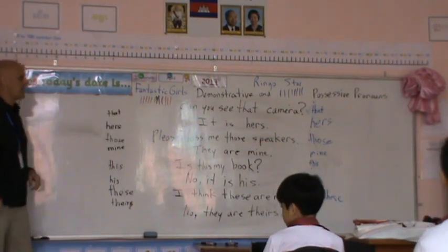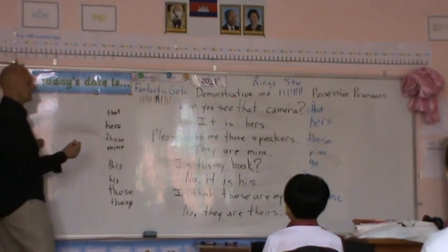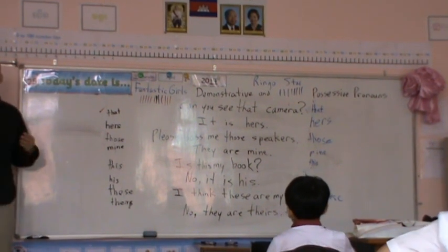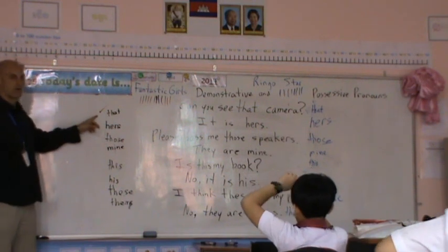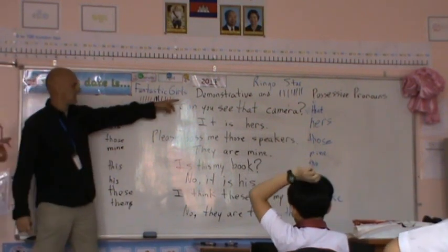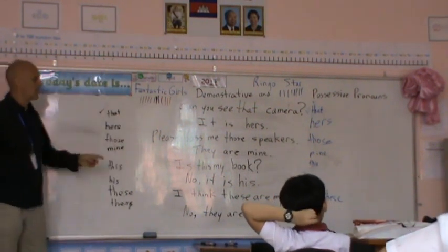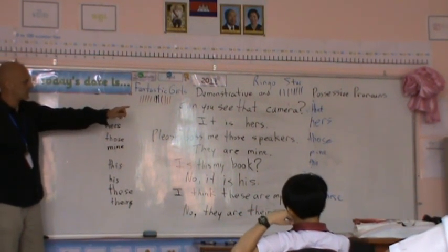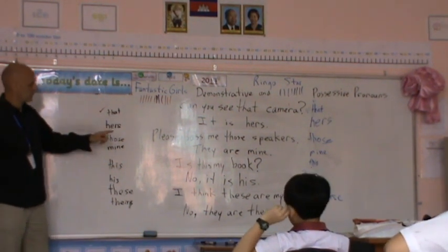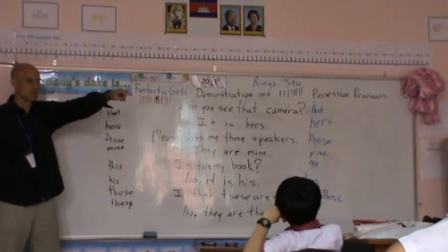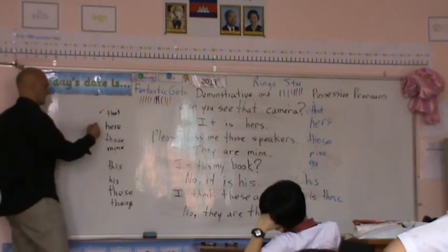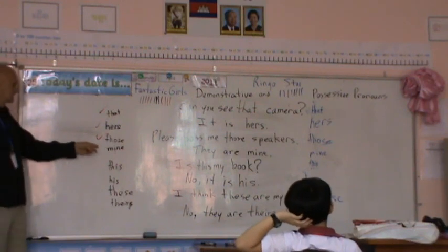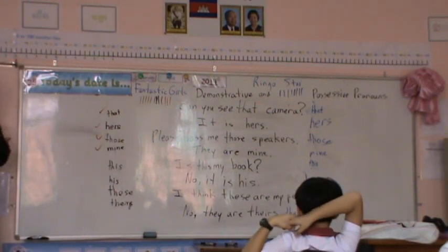Okay, can you see that camera? What is it? That. These are demonstrative pronouns — this or that. So everybody knows this, right? Yes. Demonstrative pronouns and possessive pronouns. Okay, the possessive pronoun is? Hers. Okay, it is hers.